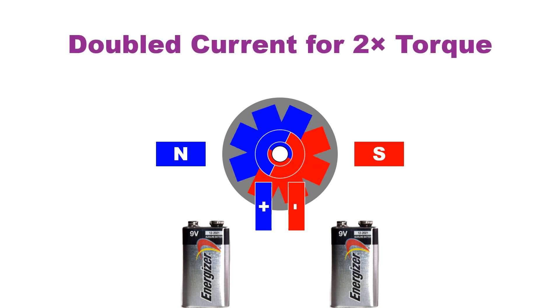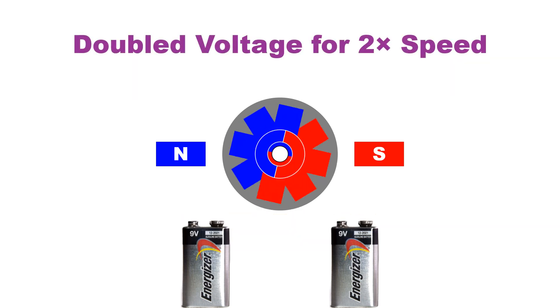To double the motor torque, connect the two batteries in parallel. To double the motor speed, connect the two batteries in series.